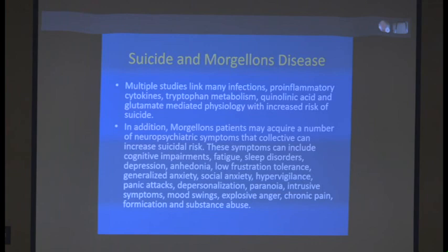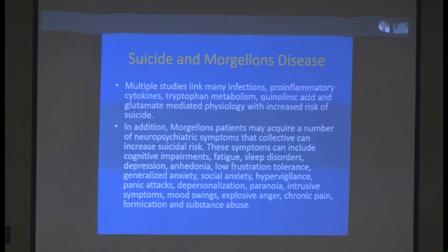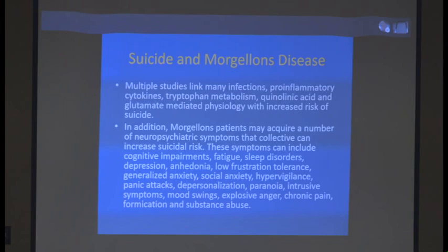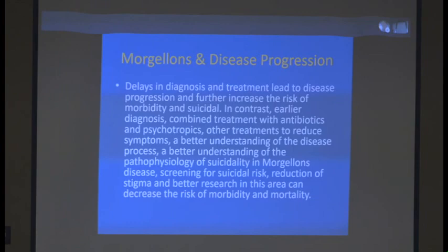Multiple studies link many infections, pro-inflammatory cytokines, tryptophan metabolism, quinolinic acid, and glutamate-mediated physiology with increased risk of suicide. In addition, Morgellons patients may acquire neuro-psychiatric symptoms that collectively increase suicidal risk, including cognitive impairments, fatigue, sleep disorders, depression, anhedonia, low frustration tolerance, generalized anxiety, social anxiety, hypervigilance, panic attacks, depersonalization, paranoia, intrusive symptoms, mood swings, explosive anger, chronic pain, formication, and substance abuse. Delays in diagnosis and treatment lead to disease progression and further increase the risk of morbidity and suicide.